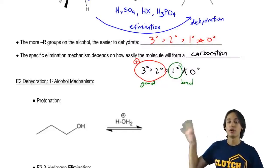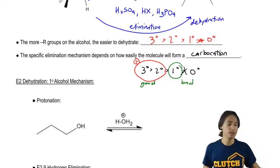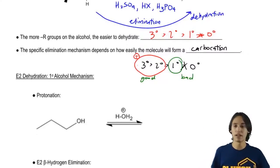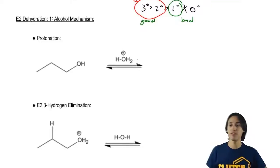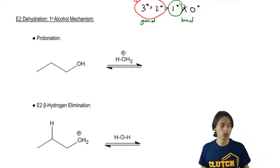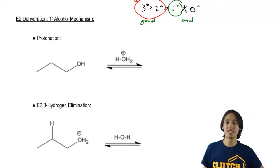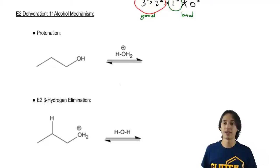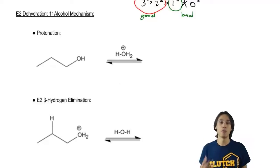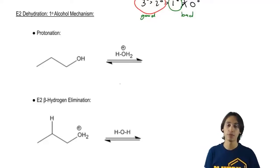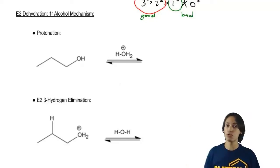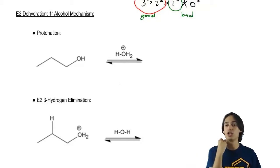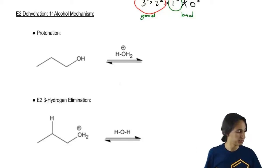Let's go ahead and start off with the primary mechanism. What if I have a primary alcohol? We know it's not that easy to dehydrate — it doesn't make good carbocations. So what mechanism are we going to use? It turns out that because we don't want to use a carbocation, we're going to use the E2 mechanism.